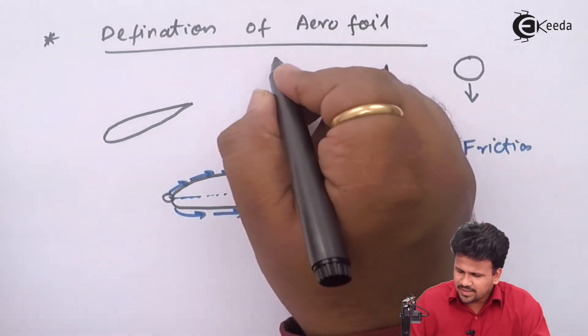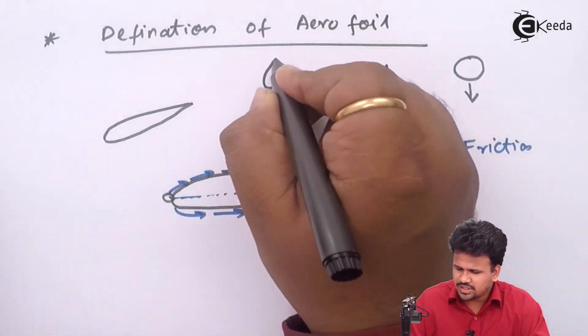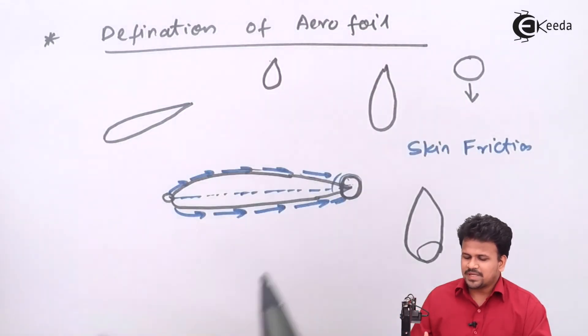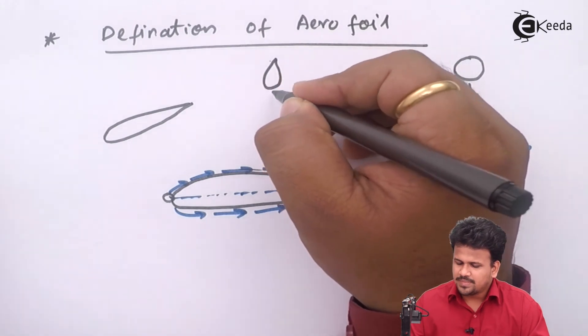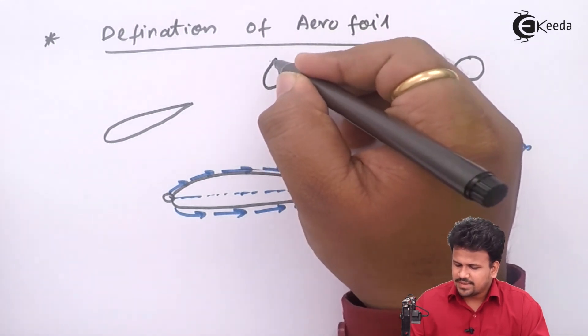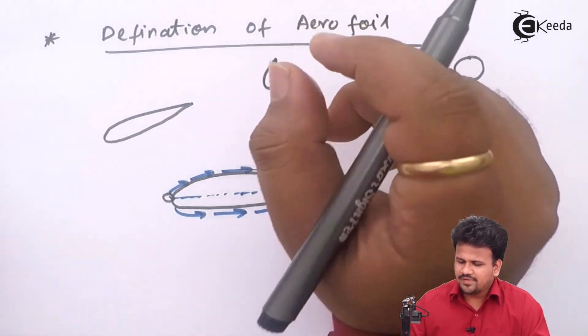These droplets will again form aerofoil shapes and there will be less in dimension but more in number.